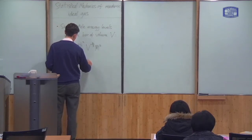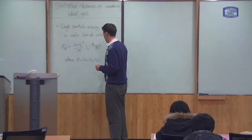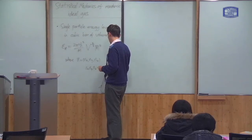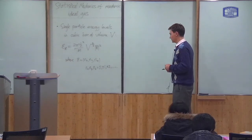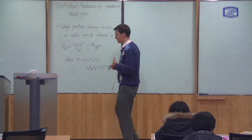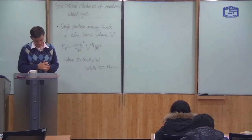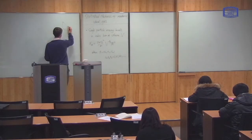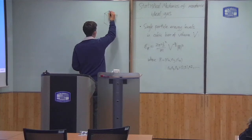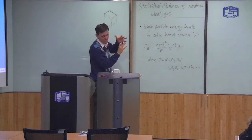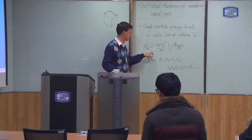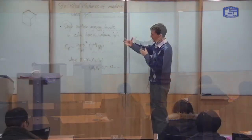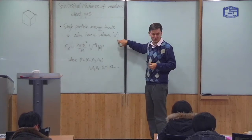In three dimensions, n has components nx, ny, and nz, each of which is an integer. This result is actually only true for a cubic box where the sides are all the same length. But the results we derive will be true for any shape of box — we only make this assumption because it makes the energy levels simpler. The shape of the box does not affect the behavior of the gas, but the volume does, so the volume of the box is important.